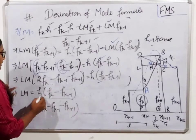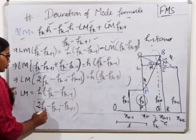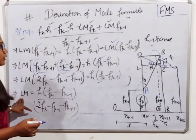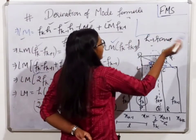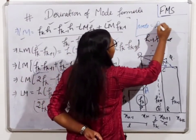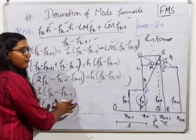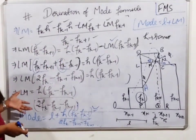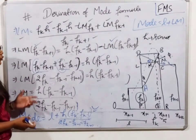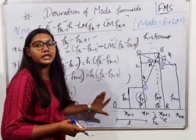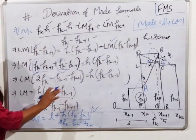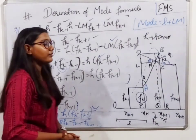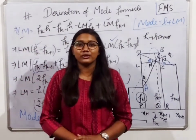So we get fk minus fk-1 divided by 2fk minus fk-1 minus fk+1, and since Mode = L + LM, the final formula is Mode = L + H(fk - fk-1) / (2fk - fk-1 - fk+1). That's all for this derivation. If it seems complicated at first, refer to the formula in the book and it will become clear. Thank you for watching, bye bye, see you in the next video.